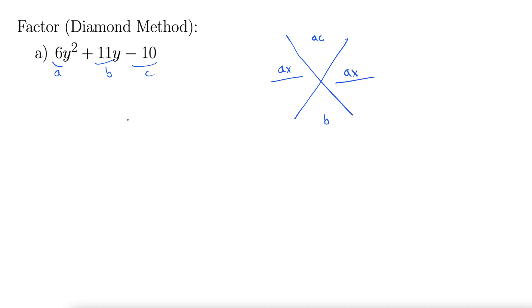So let's do it here. Set up our x there, and we'll have ac. So a times c, that's 6 times negative 10, is negative 60. And then b goes down here, 11.